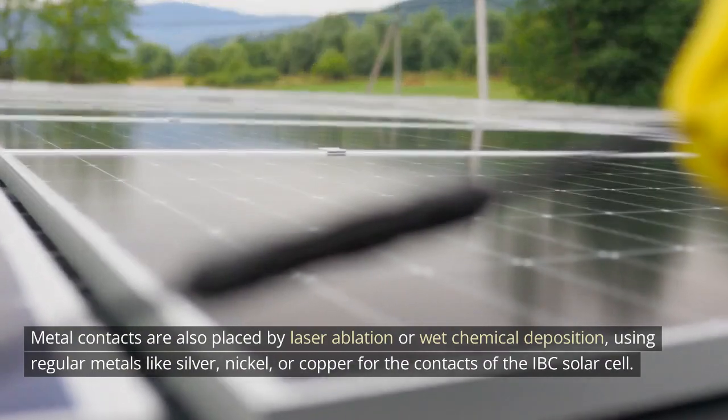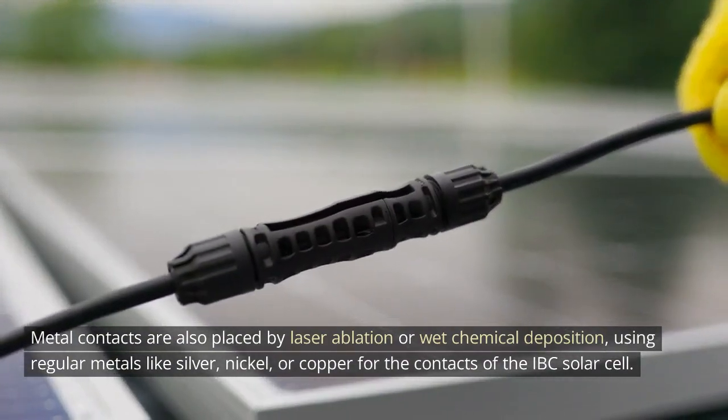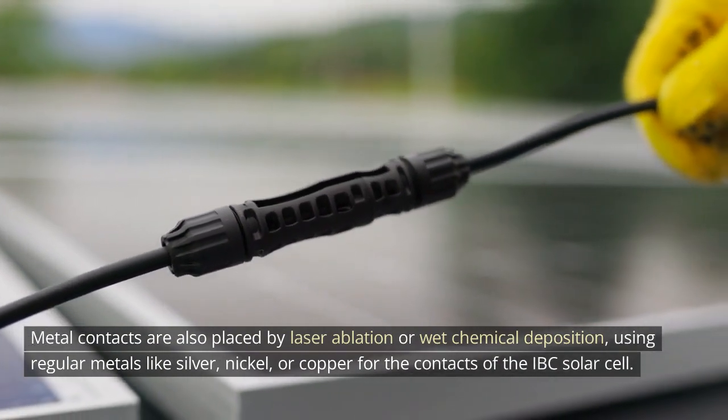Metal contacts are also placed by laser ablation or wet chemical deposition, using regular metals like silver, nickel, or copper for the contacts of the IBC solar cell.